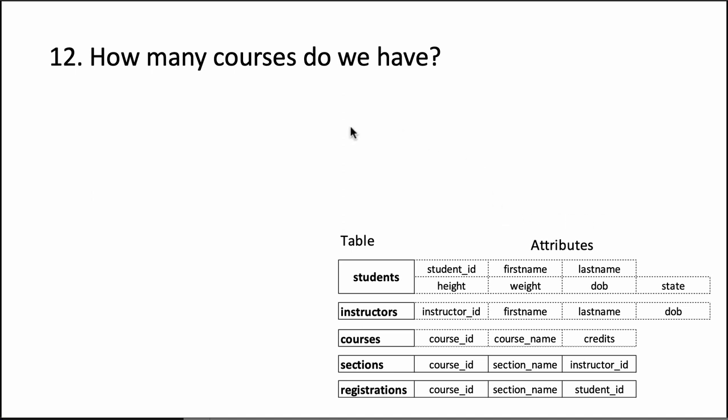This is an example of that kind of query. It says: how many courses do we have? Obviously, the answer is there are five courses, because in our database, if we look at the table courses, we see that it has five rows.